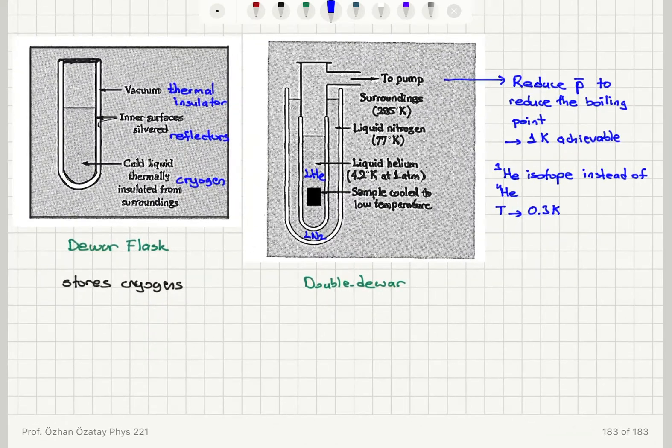Now if we want to do this really cool physics at extremely low temperatures in the micro-Kelvin scale, milli-Kelvin or micro-Kelvin scale, there is a technique called adiabatic demagnetization.